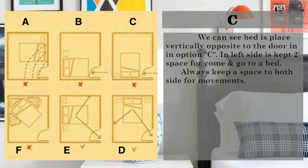So let's see, we can see bed is placed vertically, opposite side to the door. In option C, on left side, there's space to come and go to a bed. Always keep space on both sides for movement.